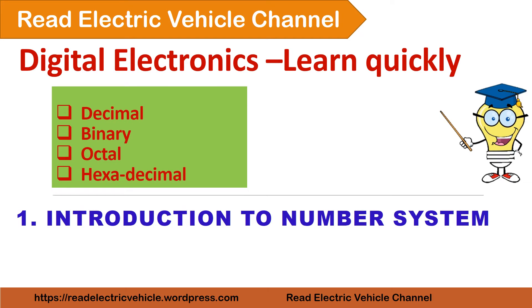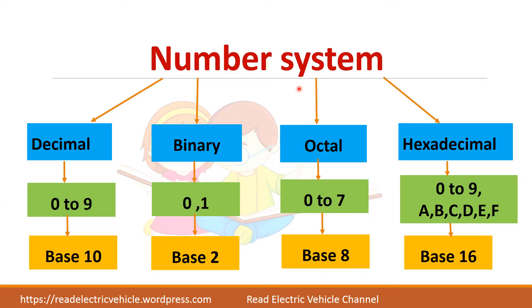Let us see about the number system. There are different types of number systems. One is the decimal number system which we normally use. Another one is the binary number system which consists of zeros and ones. The octal and hexadecimal number systems are used in digital circuits, which are actually derived from the binary system. Let us see about each number system in detail.